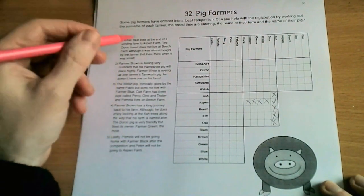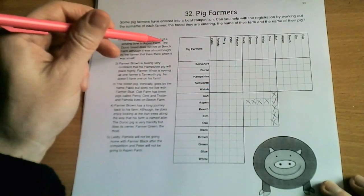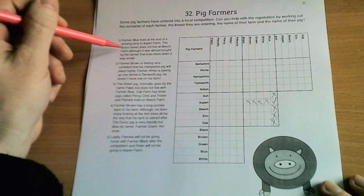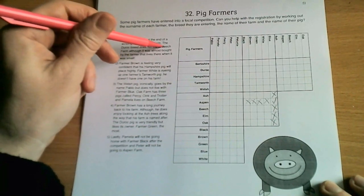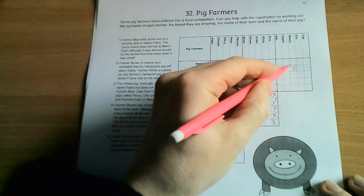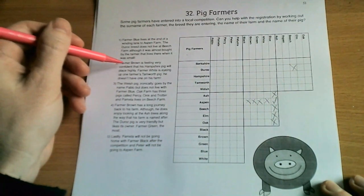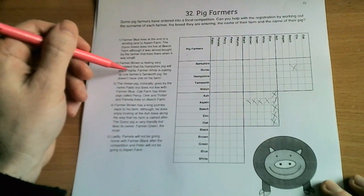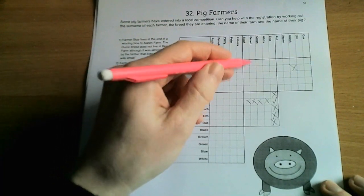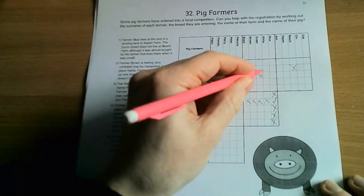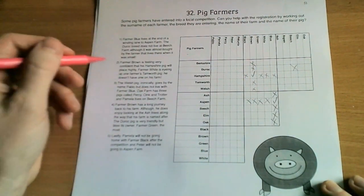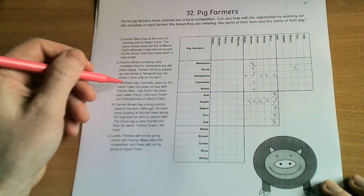So that's the first clue checked. The second is the Duroc breed does not live at Beech Farm, so we can put a cross where Duroc intersects with Beech. Farmer Brown is very confident that his Hampshire pig will place highly, so Brown and Hampshire are connected. We put the tick in and cross off the others like this.